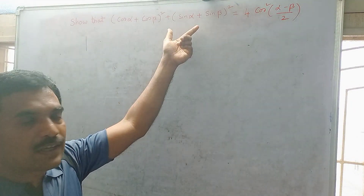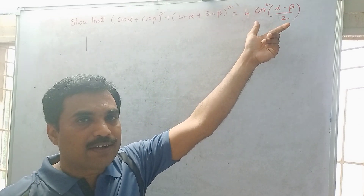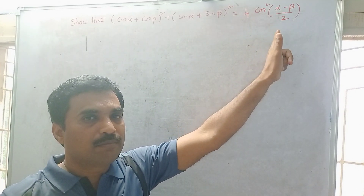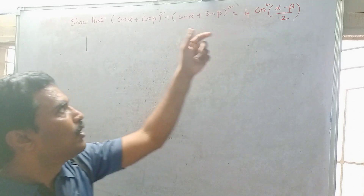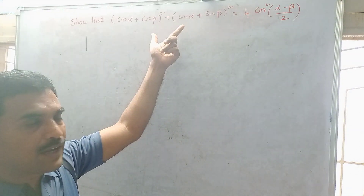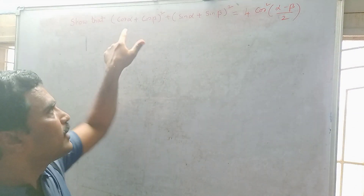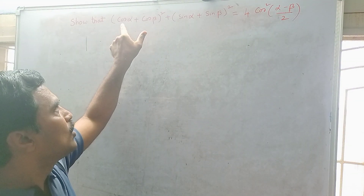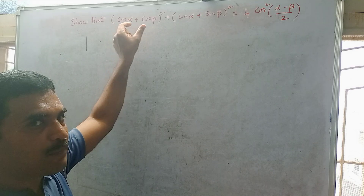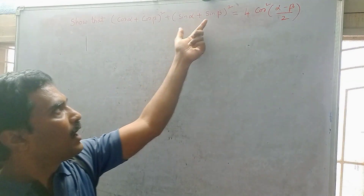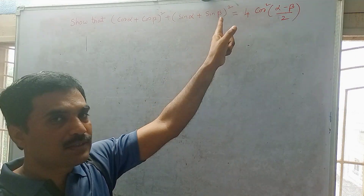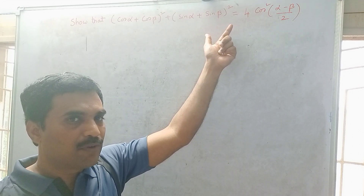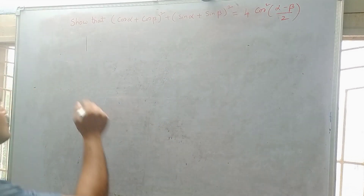You have to simplify the left hand side to arrive at the right hand side. The right hand side is 4 cos²((α − β)/2). To simplify the left hand side, which is (cos α + cos β)², you have to apply the cos A + cos B formula, and for (sin α + sin β)² you apply the sin A + sin B formula. So first we are going to write those two formulas.